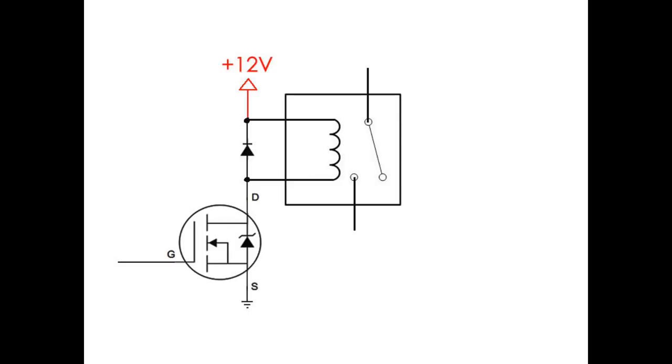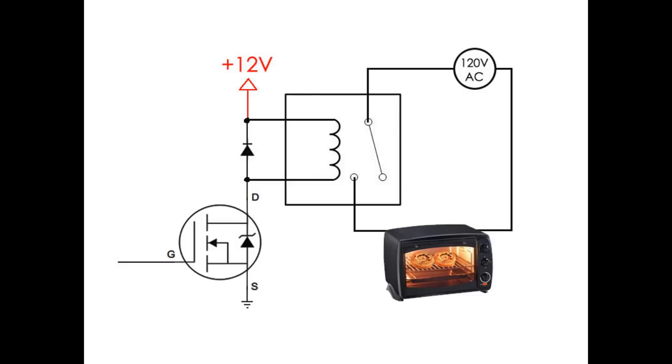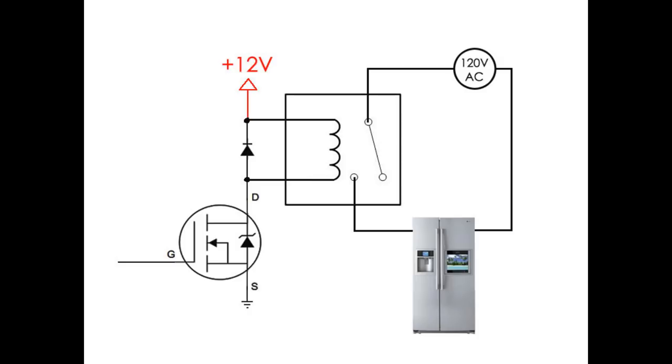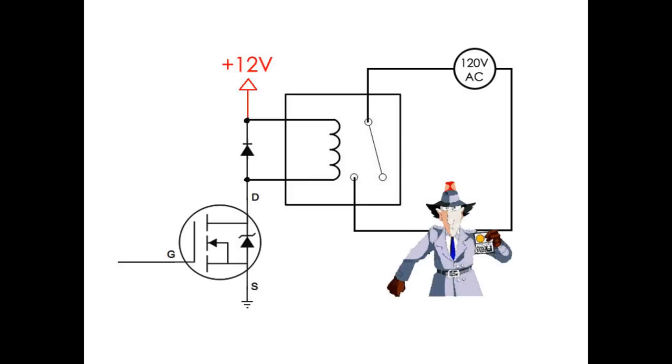And once you have a relay being switched on and off, you can switch light bulbs on and off, you can switch toaster ovens on and off, and you can switch your refrigerator on and off. Basically, if you can get a system that puts out a 0-5 volt signal, you can attach a transistor to it, and you'll be able to switch any gadget on and off.